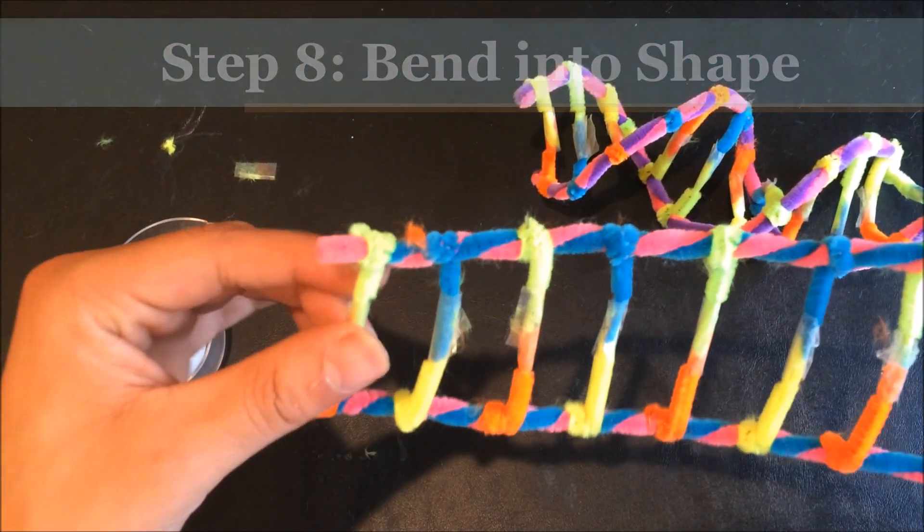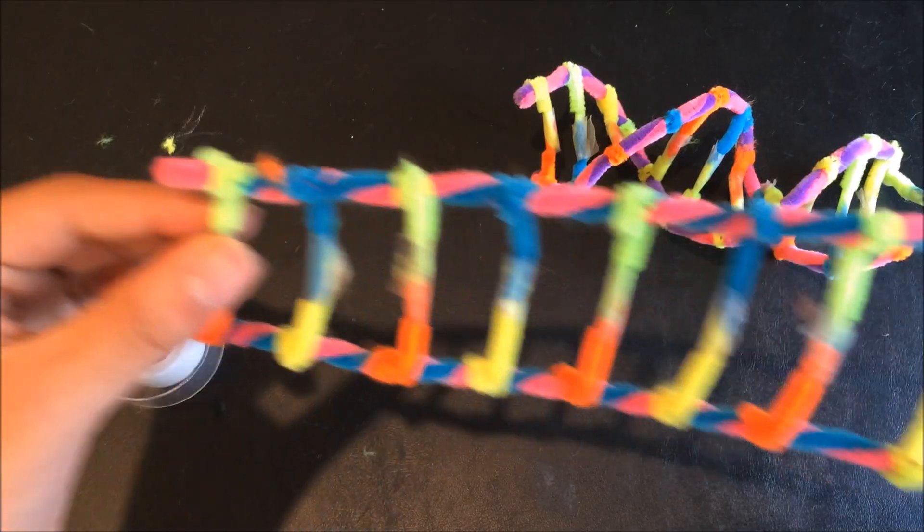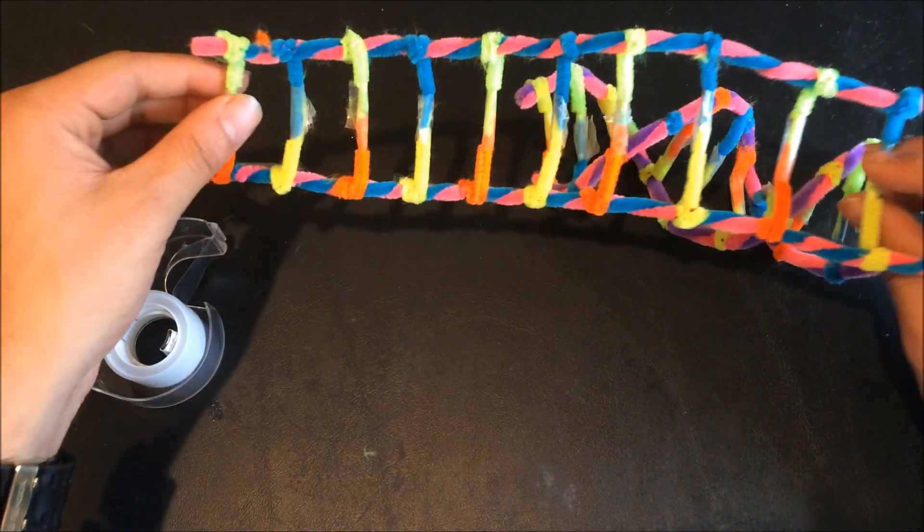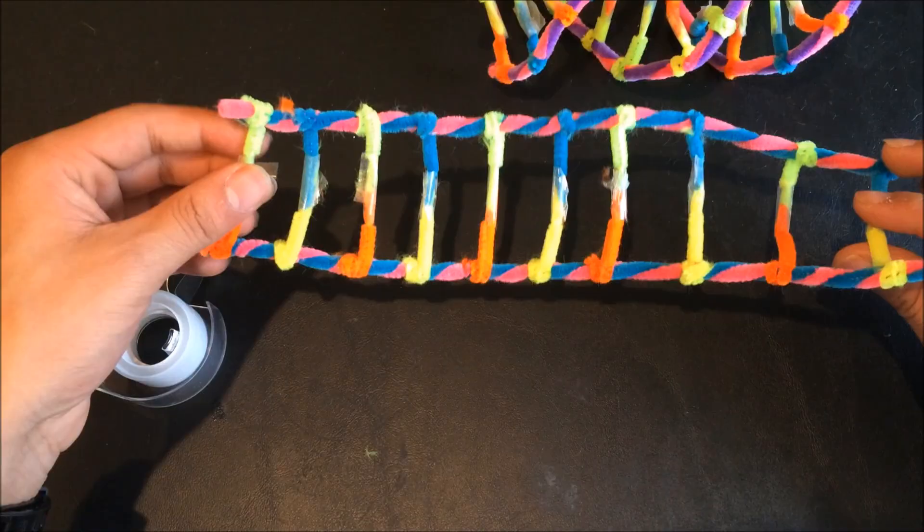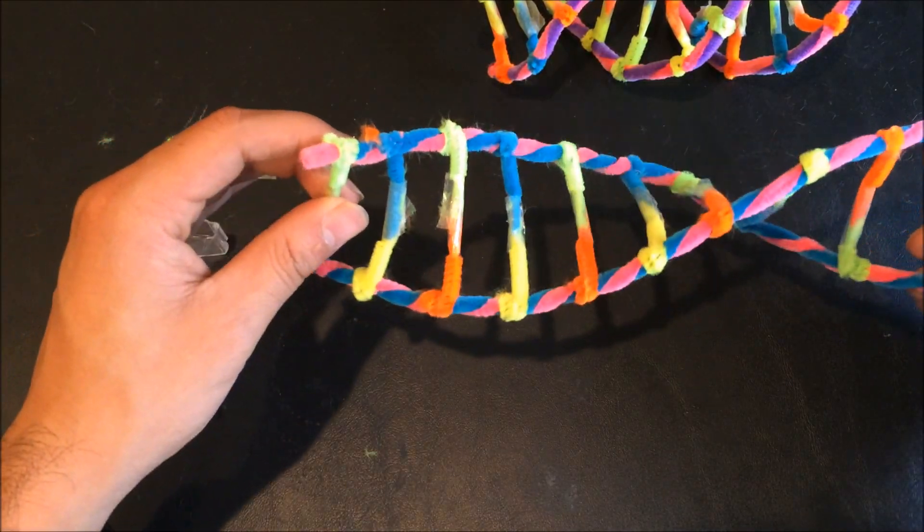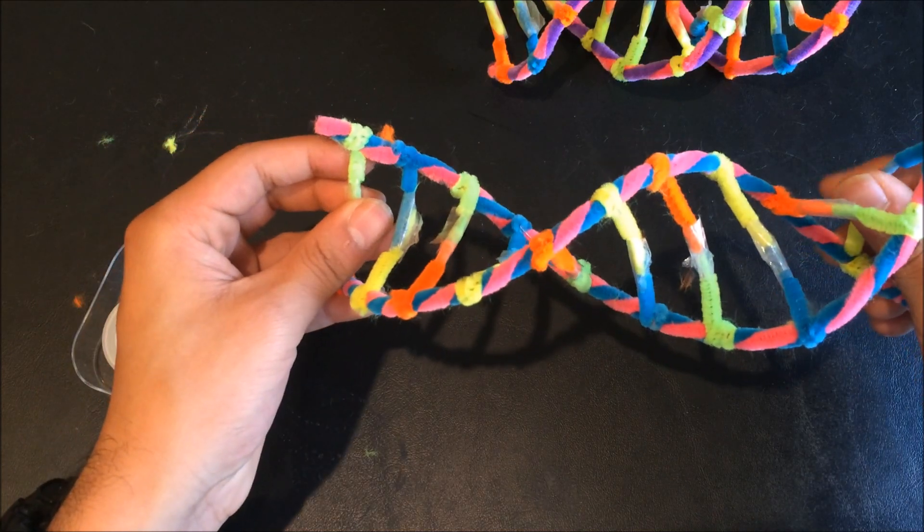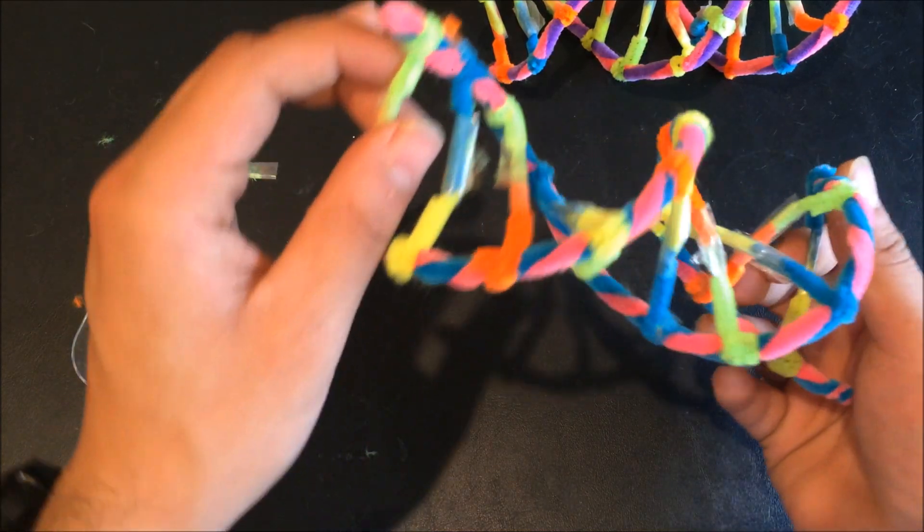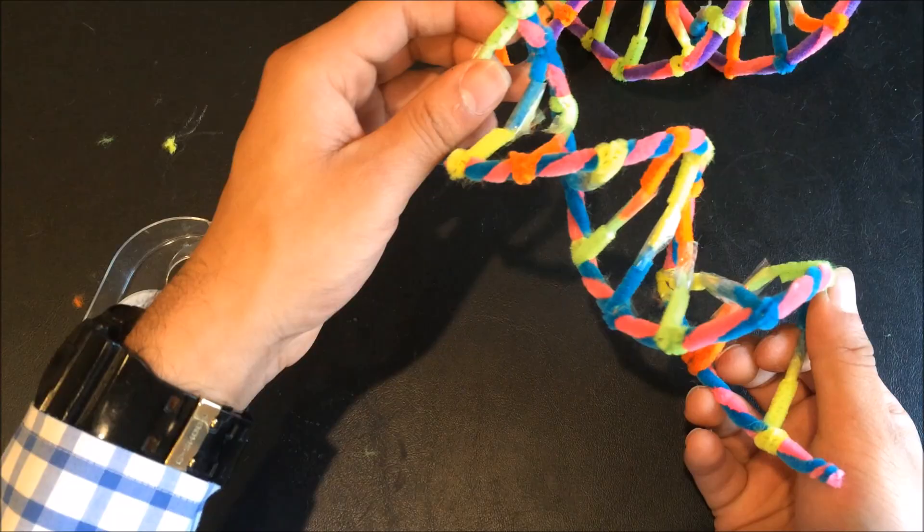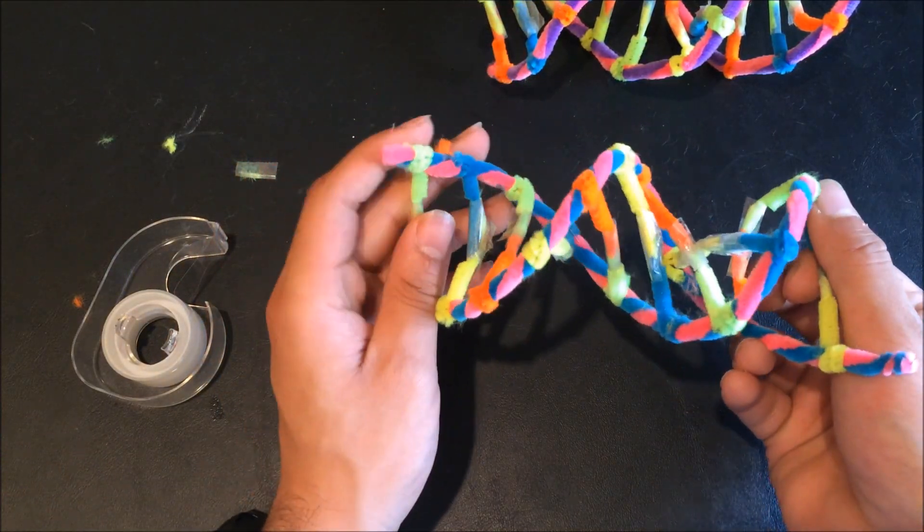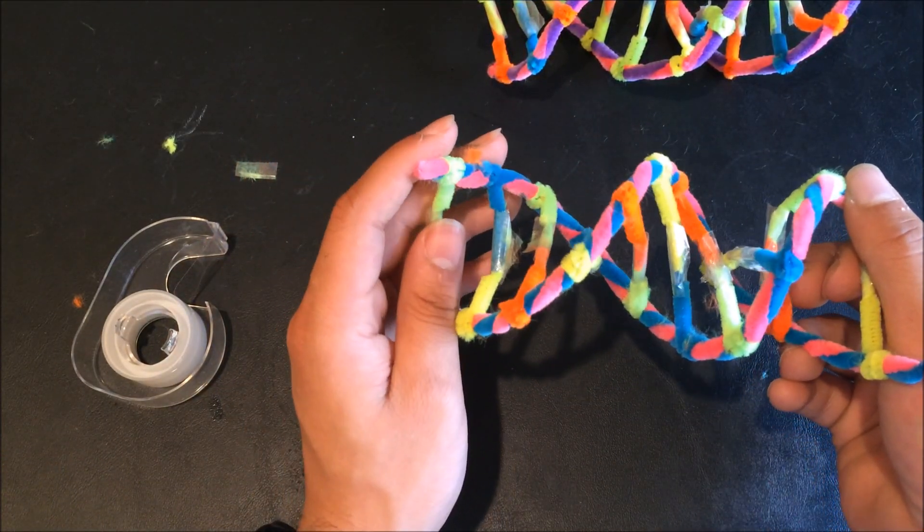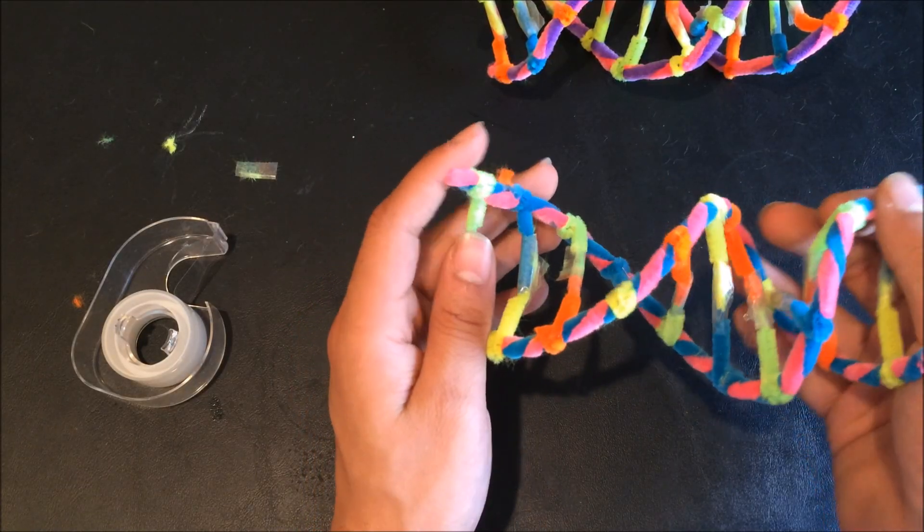So to do that, grab one end here and grab the other end at the same time. And then all you have to do is slowly turn the model and hold it in place. Something like that. Try to keep it straight. The beauty of pipe cleaners is that eventually, they will hold in place.